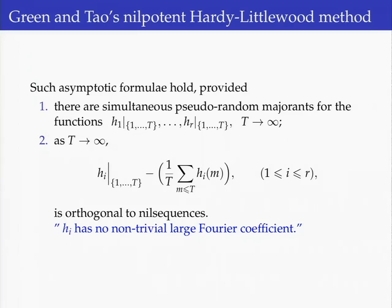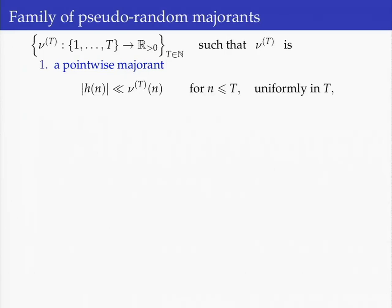I will focus on the first of these two assertions. To do so, I start by defining what a family of pseudorandom majorants actually is. A family indexed by an integer parameter of functions defined on the first t integers taking values in strictly positive numbers will be a family of pseudorandom majorants for some function h if: first, it is a pointwise majorant up to some implicit constant, uniformly in t.